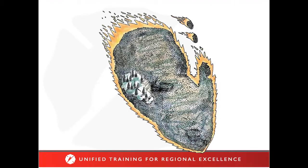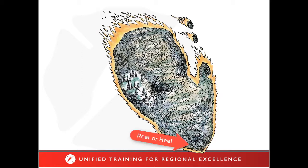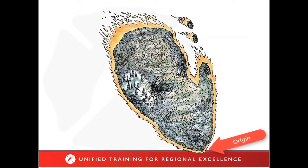Areas of the fire are generally determined by the predominant direction of fire spread. The most rapidly moving portion is designated the head of the fire. Portions of the perimeter at right angles to the head are known as the flanks, and the slowest moving portion is known as the rear or heel of the fire. The long, narrow extensions of a fire projecting from the main body are known as fingers. A fire ignited outside of the perimeter of the main fire by flying sparks or embers are spot fires. The location where materials were first ignited is called the origin — it is very important to protect this area to preserve physical evidence.